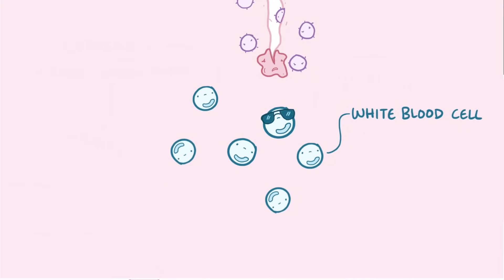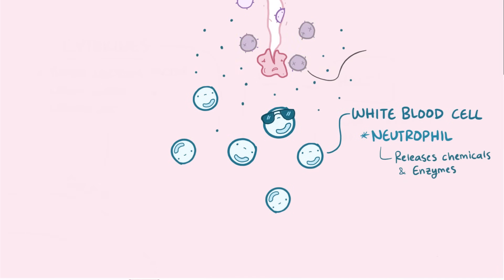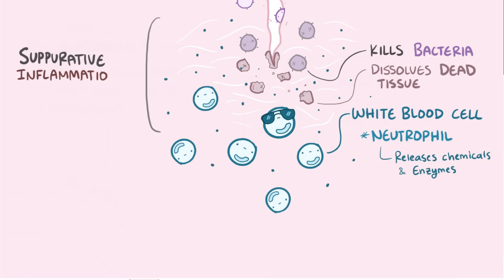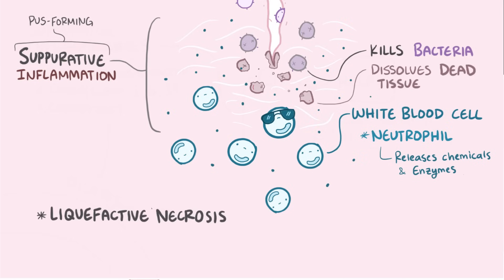Often the first immune cells at the scene are neutrophils, which release chemicals and enzymes that kill bacteria and dissolve pieces of dead cells, creating a pool of dead material. This is a specific type of acute inflammatory response called suppurative inflammation, which simply means that pus is created in the process. From a macroscopic view, this is sometimes referred to as liquefactive necrosis, because the area of dead tissue turns into liquid.